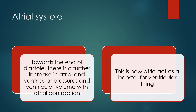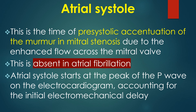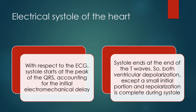Atrial systole: towards the end of diastole, there is a further increase in atrial and ventricular pressures and ventricular volume with atrial contraction, as atria act as a booster for ventricular filling. This is the time of presystolic accentuation of the murmur in mitral stenosis due to enhanced flow across the mitral valve — absent in atrial fibrillation. Atrial systole starts at the peak of the P wave on the ECG, accounting for the initial electromechanical delay. Electrical systole starts at the peak of the QRS and ends at the end of the T waves, so both ventricular depolarization and repolarization are complete during systole.